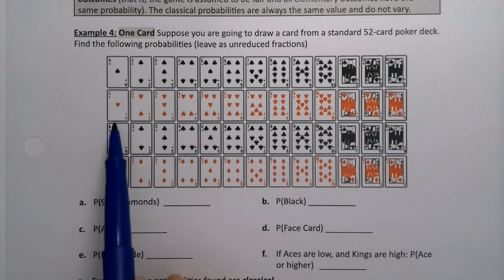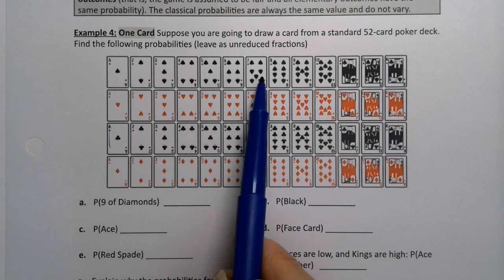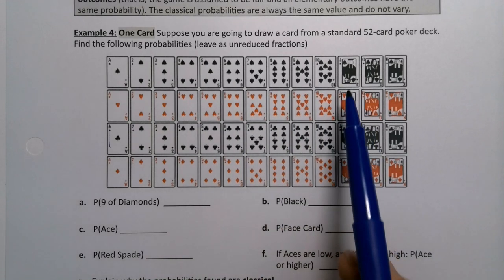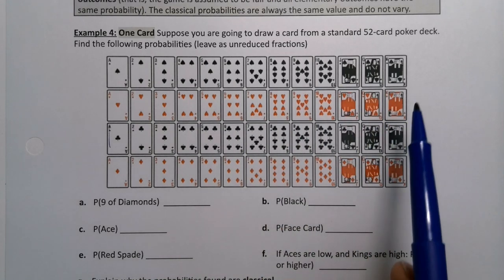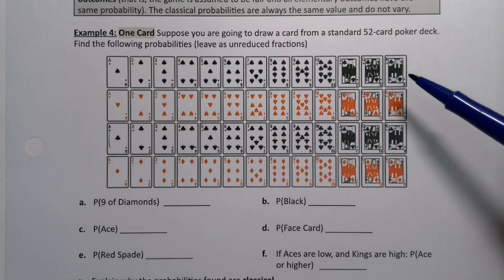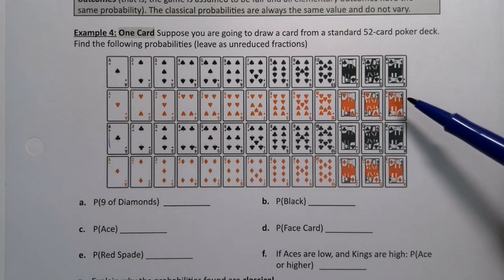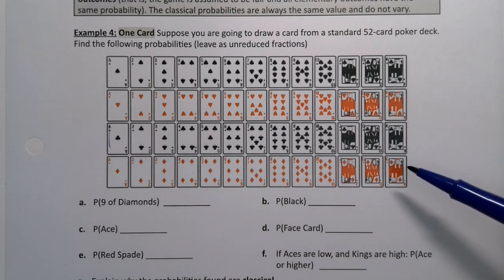So here are the aces, 2, 3, 4, 5, 6, 7, 8, 9, 10. These are jacks. These are the queens. And these are the kings. There are four suits: spades, hearts, clubs, and diamonds.